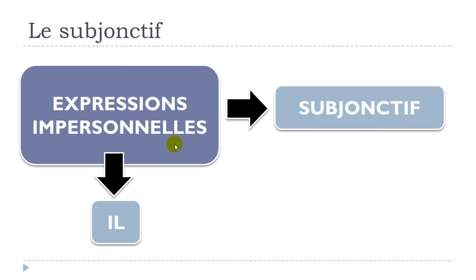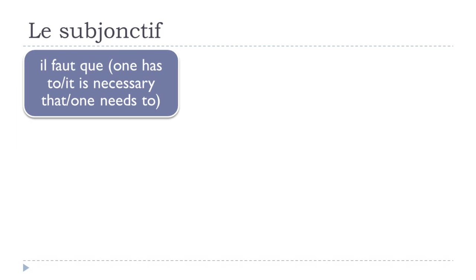Keep in mind that when we talk about expressions impersonnelles, we are talking about these structures that will be conjugated only at the 'il' form. So je, tu, nous and vous — they don't exist. It's only 'il'. We'll see in this list and it will be quite clear what we are talking about: it is necessary that, one needs to.